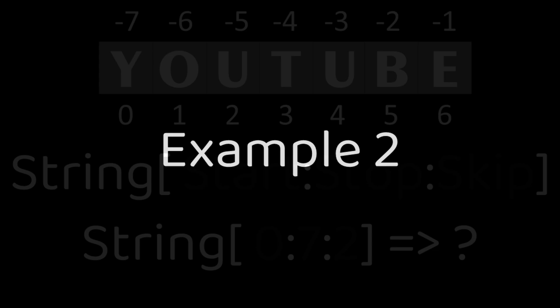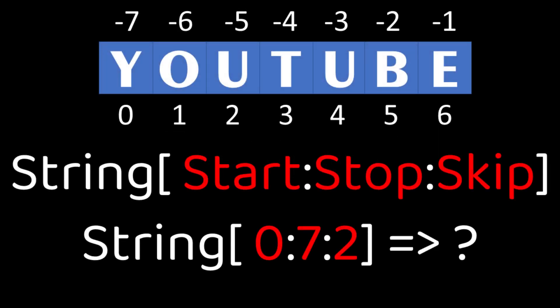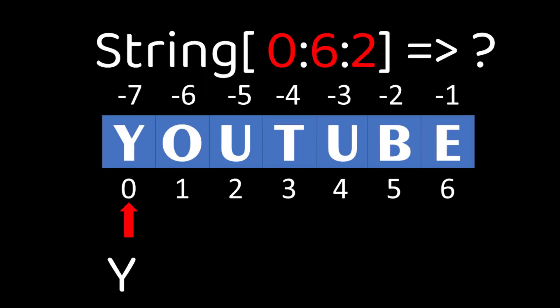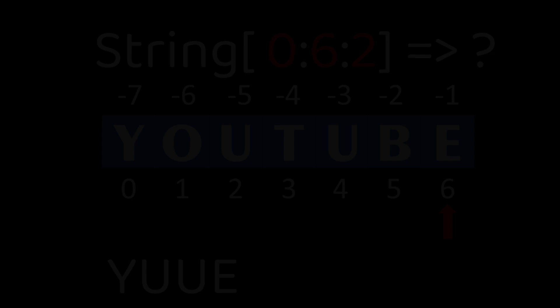Example 2. The range of the index is 0 to 7 and it will return 0 to 6 and the skip value is set to 2. Hence, we will start with 0th index then add 2 to 0 and return 2, then 2 plus 2 return 4, then 4 plus 2 return 6 index respectively. So, the string printed or sliced would be y, u, u and e.